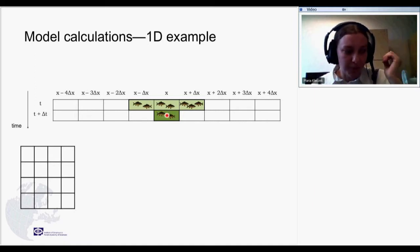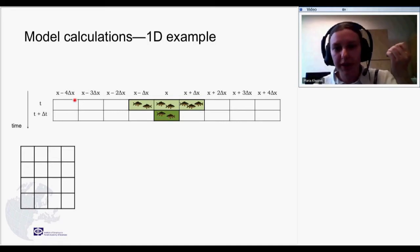So what the computer does is simply calculating, as I said, values of all model variables, like coming back to the atmosphere, this is air pressure, temperature, anything, for each grid point in each subsequent time step.